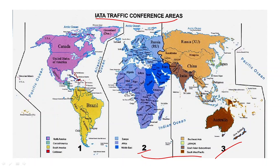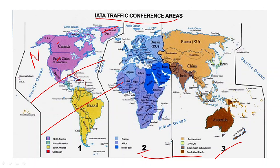Talking about sub-areas of TC1, we have three sub-areas: first, North Atlantic; then Mid Atlantic; then South Atlantic. In North Atlantic we have different countries in the northern region - USA, Canada, Alaska, Greenland, Mexico, and the Hawaiian Islands. All these countries and islands in the north are in the North Atlantic sub-area.